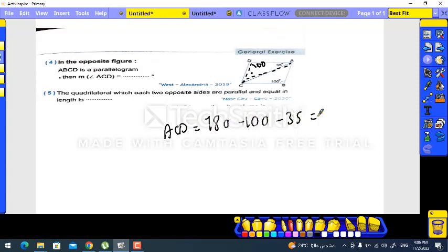Then ACD equals 180 minus 100 minus 35, it will be 45 degrees. Question 5: the quadrilateral in which each two opposite sides are parallel and equal in length - yes, it's a parallelogram only.